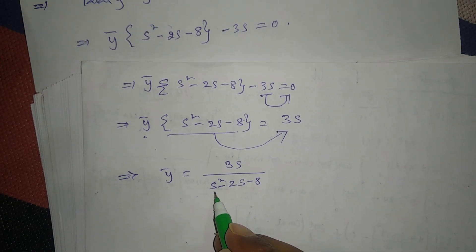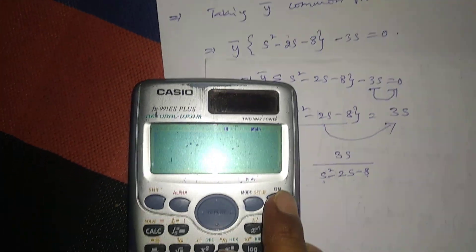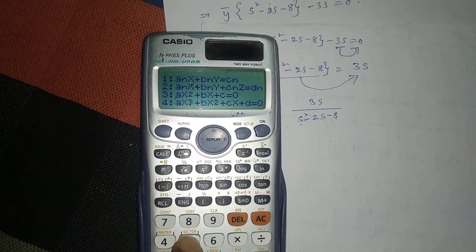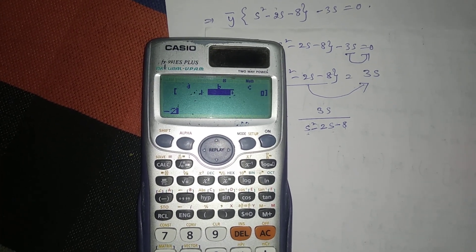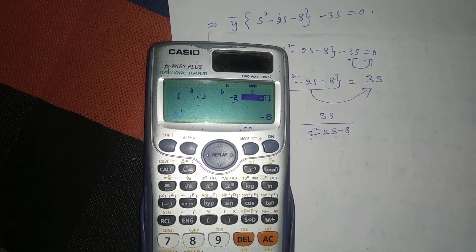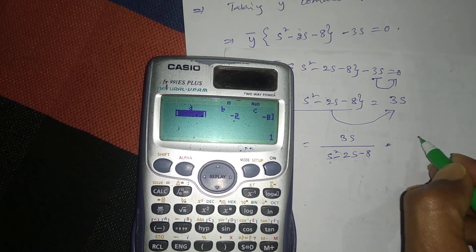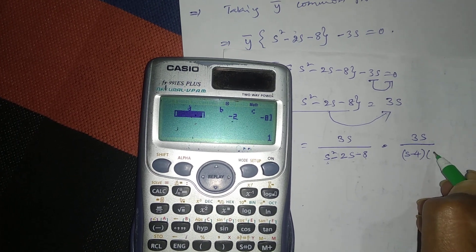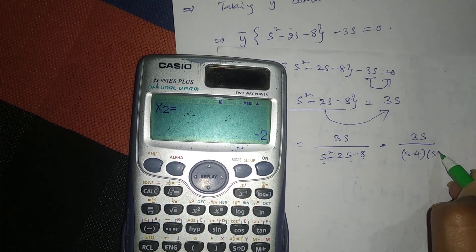Observe the denominator — it is a quadratic expression. Factoring S² - 2S - 8 gives (S - 4)(S + 2). So ȳ = 3S / [(S - 4)(S + 2)].